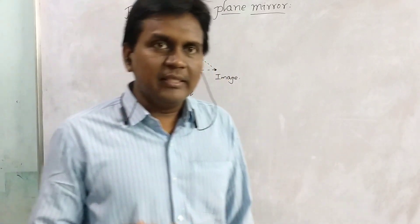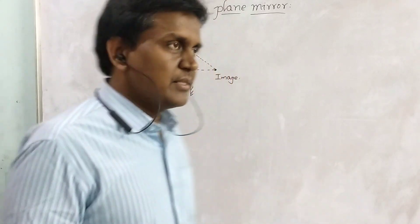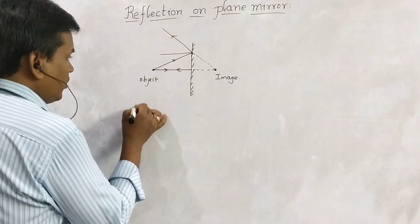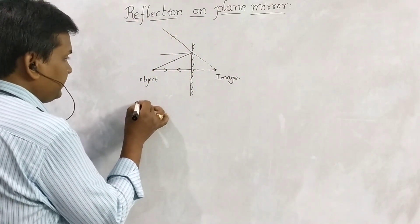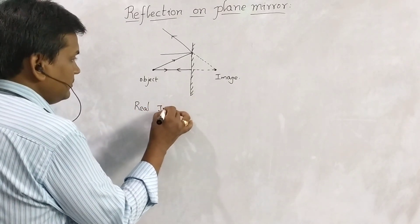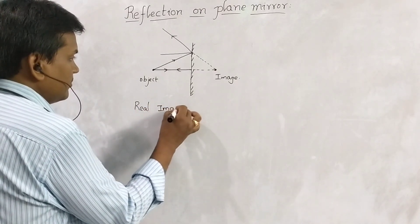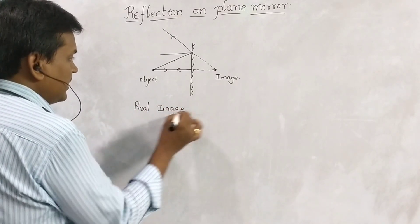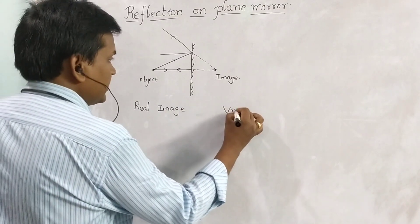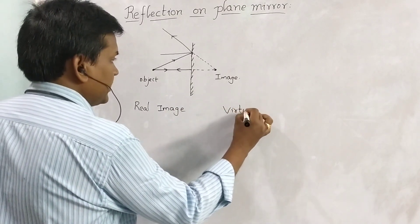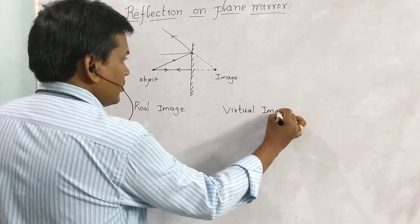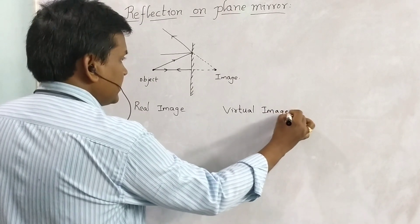These images are of two types: one is a real image and another one is a virtual image.